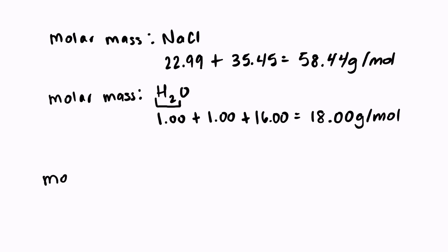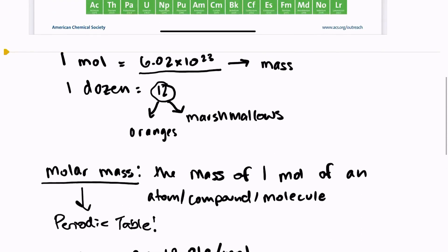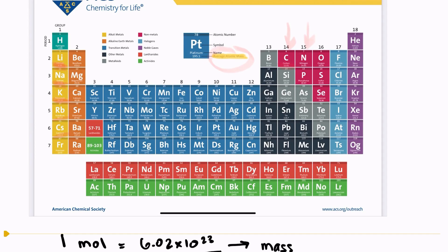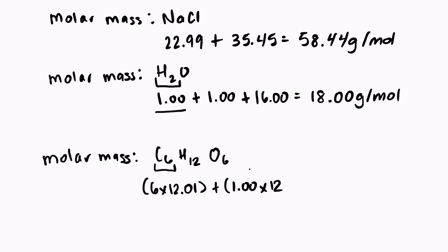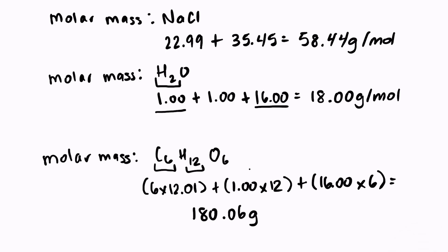Let's try a harder one. What if we wanted to know the molar mass of sugar, C6H12O6? We look at the periodic table — carbon is number 6 with a mass of 12.01, and we have six of them, so 6 times 12.01. Hydrogen has a mass of 1.00, so 1.00 times 12. Oxygen has a mass of 16.00 times 6. That gives us a molar mass of 180.06 grams per mole.